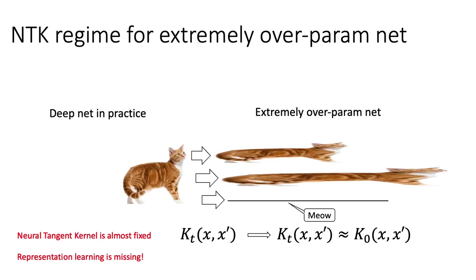So NTK regime for this extremely overparameterized net is capturing only part of the picture. As we're showing in this cartoon, normal deep net in practice is like this real cat. It's cute and it has a corresponding kernel K_t that is changing with time.